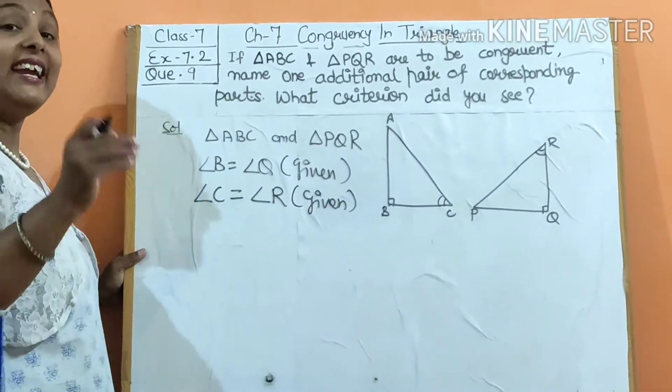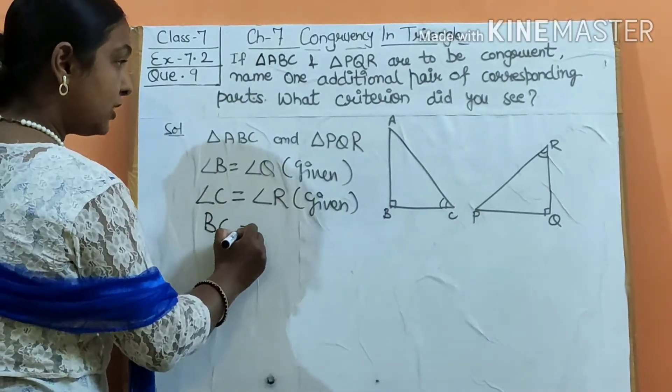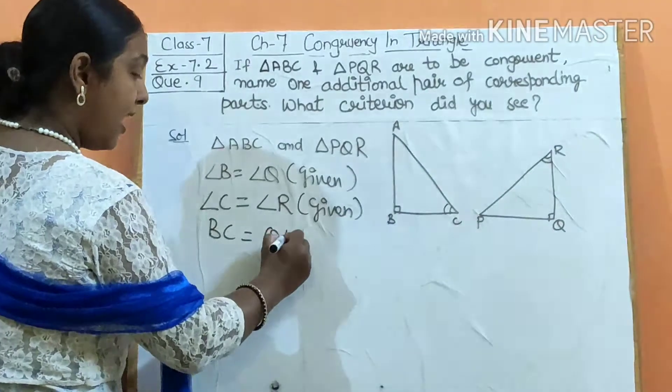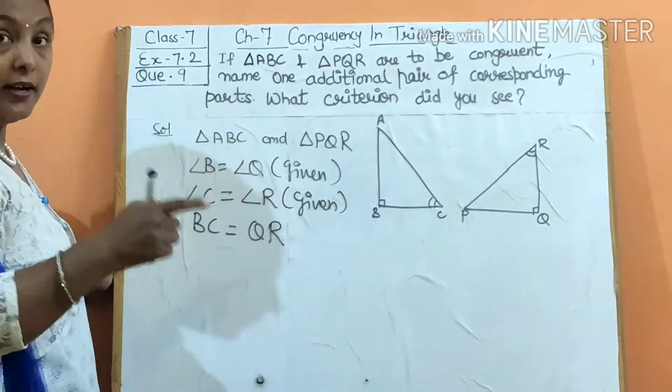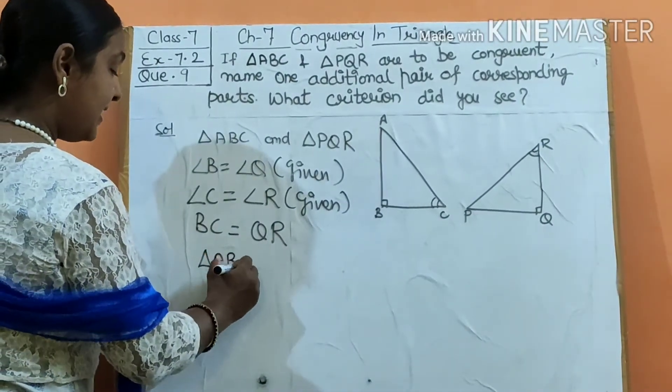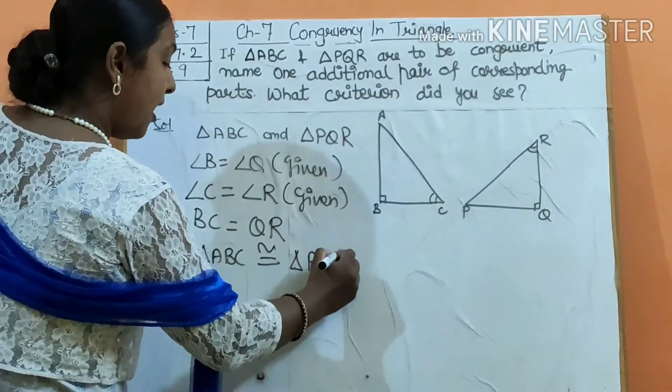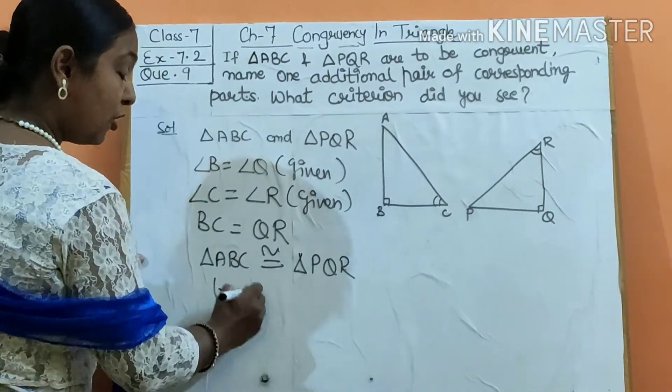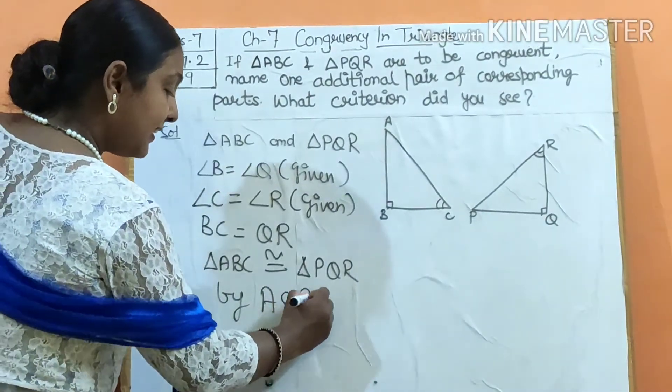By the ASA criterion, BC equals to QR. So, that's why triangle ABC and PQR are congruent. Triangle ABC is congruent to triangle PQR by the ASA congruency criterion. Clear?